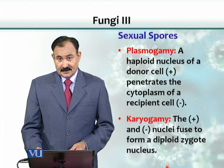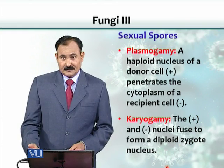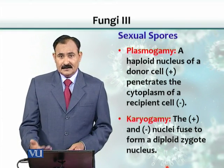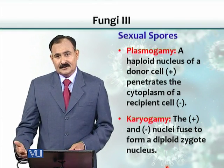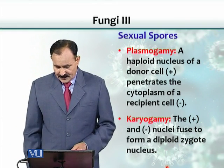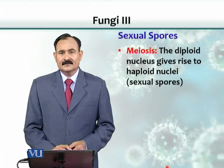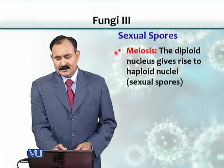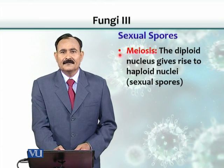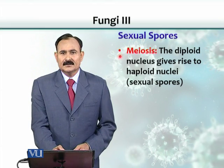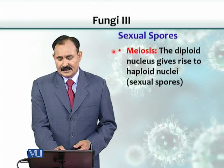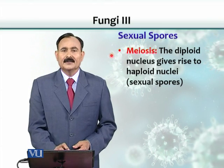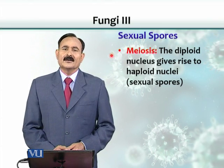And naturally, when the spores would be formed, it will split into n again. So there will be a third process which reduces the number of chromosomes to haploid number, and that we know is called meiosis.